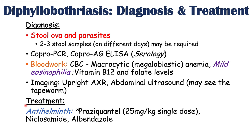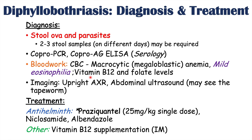Treatment involves antihelminthic therapy. The medication of choice is praziquantel, typically dosed at 25 mg/kg as a single dose. Other options include niclosamide or albendazole. Because fish tapeworms can cause vitamin B12 deficiency, B12 supplementation is important — often given intramuscularly, since there may be issues with gastrointestinal absorption of oral vitamin B12.